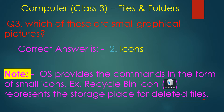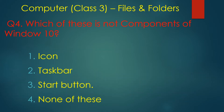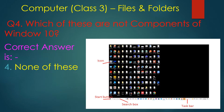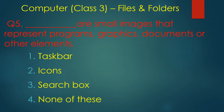Which of these is not a component of Windows 10? The answer is none of these — all four shown are components. Windows 10 has four components: icon, start button, search box, and taskbar. Icons are small images that represent programs, graphics, documents, or other elements.